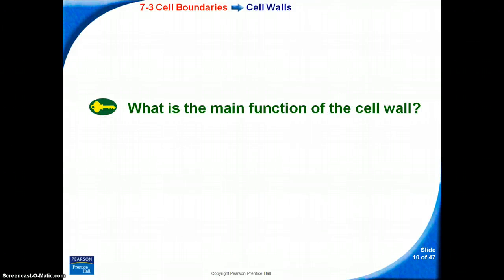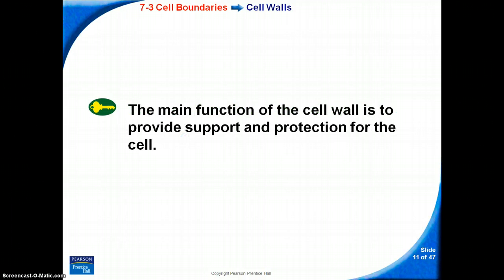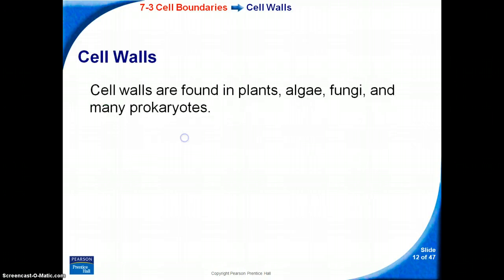Key Concept 2: What is the main function of the cell wall? The main function of the cell wall is to provide support and protection for the cell. Cell walls are found in plants, algae, fungi, and many prokaryotes.